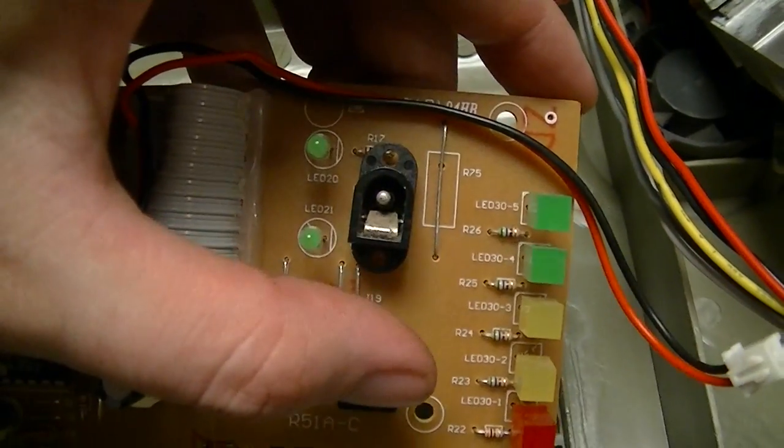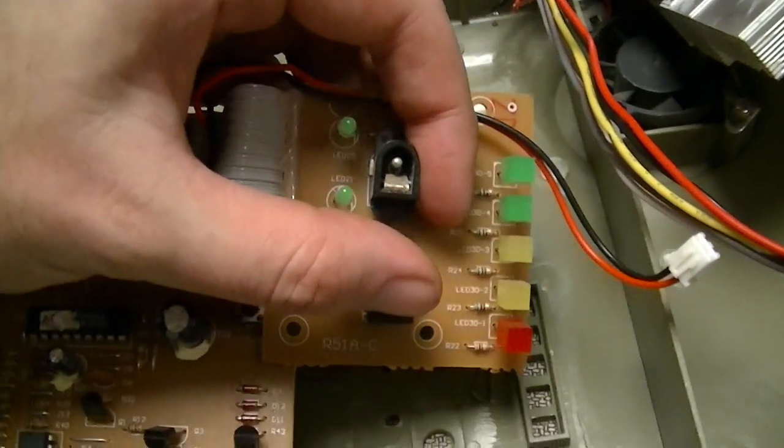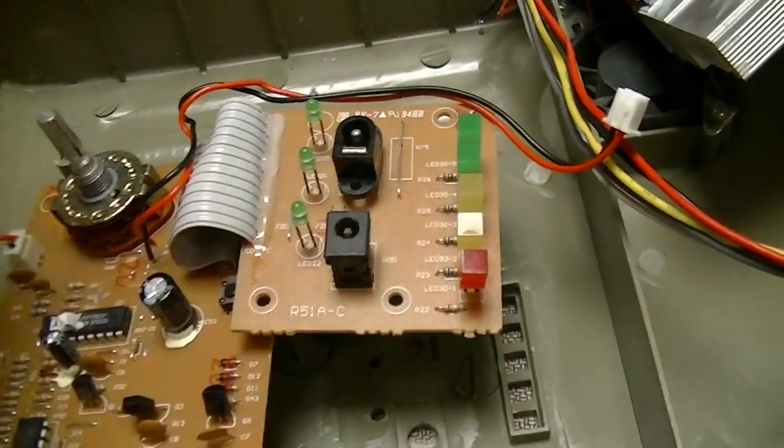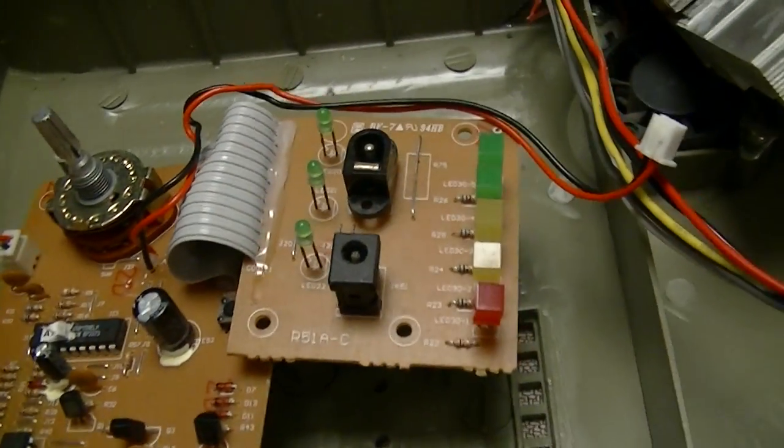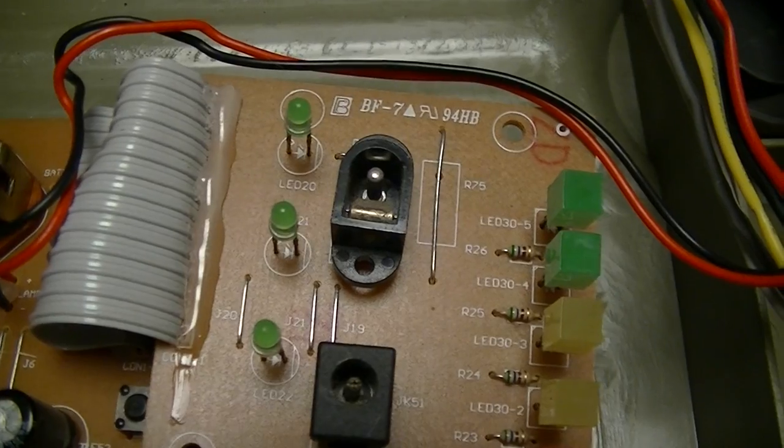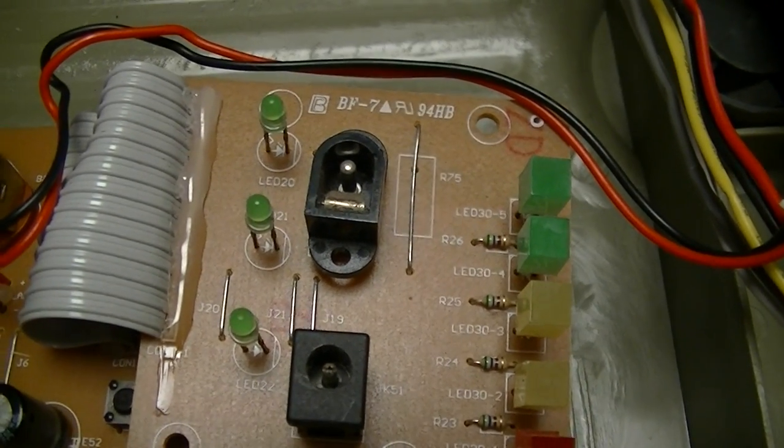The top barrel connector is used for either charging through the supplied charger which was just a 400 milliampere 12 volt wall transformer